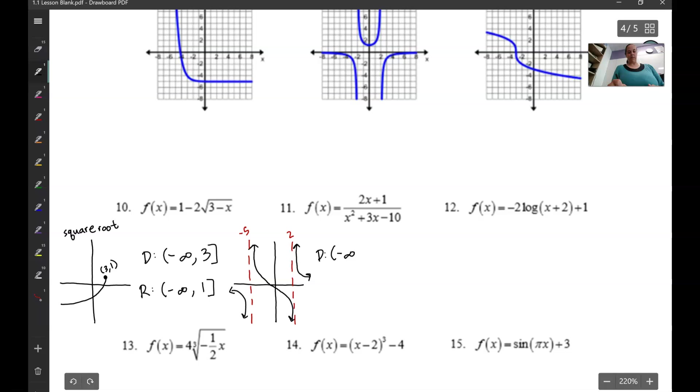So start with domain. Domain, we're going to go from negative infinity up to negative 5. But we don't want to include negative 5. So parentheses. Then we're going to go from negative 5 up to 2. Once again, not including any of them because they're asymptotes. They go up to that point, but don't include it. And then from 2 up to infinity. Range. Now if we look at that middle section again, because of those arrows on the end of it, that range is going to go all the way from negative infinity up to positive infinity. It's going to hit every single y value. So there we go.